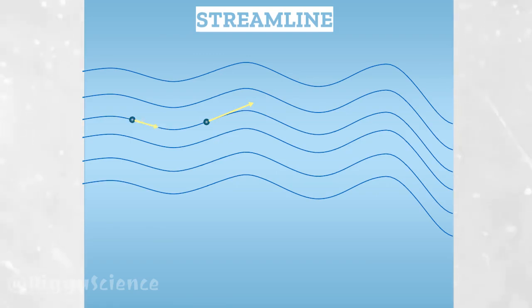Likewise the particles at this point, at this point, and at this point. By knowing the Streamline line, we can know the direction of the particle's velocity.